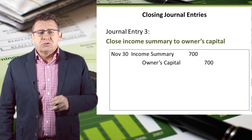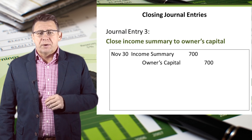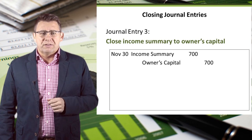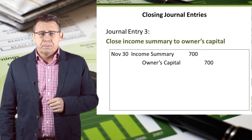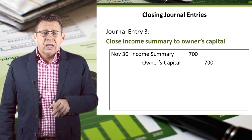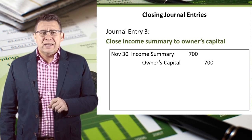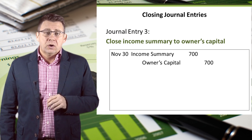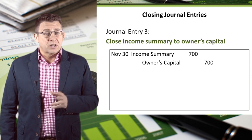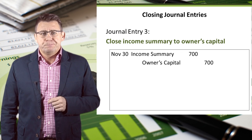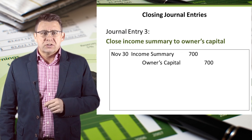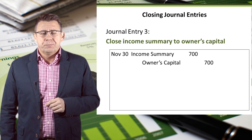So to close income summary, we will debit the account $700. The balance is now zero, and it will remain zero until next period when we close our temporary accounts all over again. The credit is to owner's capital.